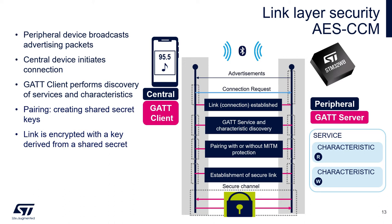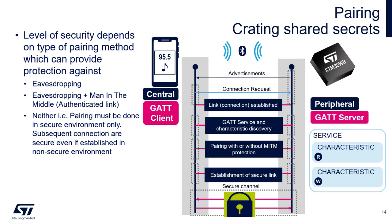The link is then encrypted. The security level depends on the pairing method used. The method can provide protection against eavesdropping, against eavesdropping plus man-in-the-middle attack — also called an authenticated link — or it can provide neither, meaning pairing must be done in secure environments only. However, if the pairing information is stored persistently — which is bonding — subsequent connections may occur securely even in non-secure environments.